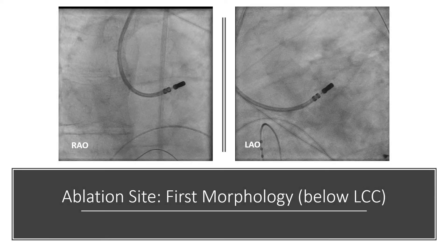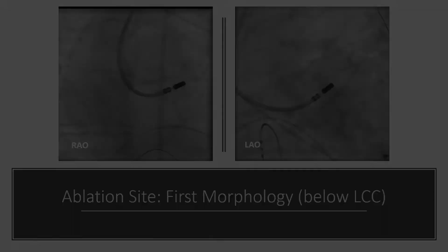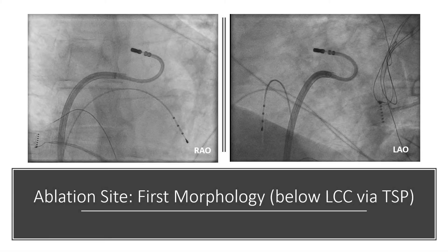The RAO and LAO projections here show the earliest point below the left coronary cusp at aortomitral continuity. However, we had early recurrence after ablation at this location, so we decided to change our axis from retrograde to transeptal. Finally, with the transeptal axis, we successfully ablated the second morphology at aortomitral continuity. In the next figure, we will see together the successful ablation signal.